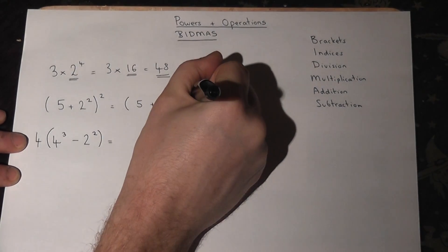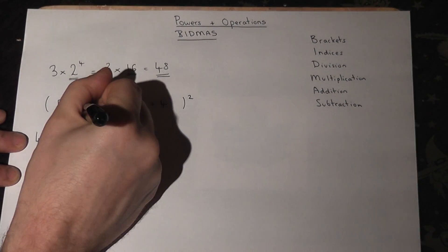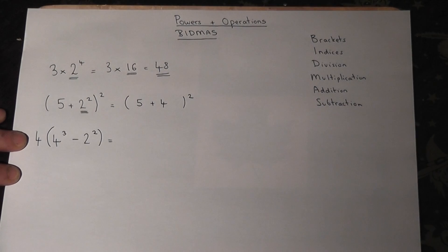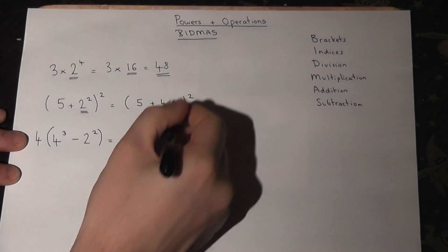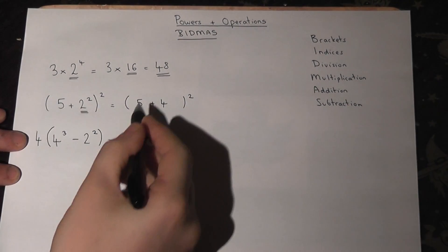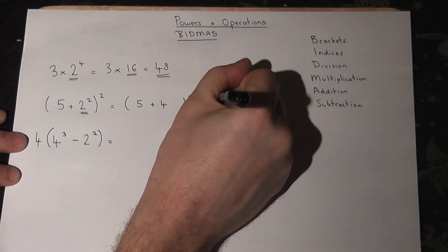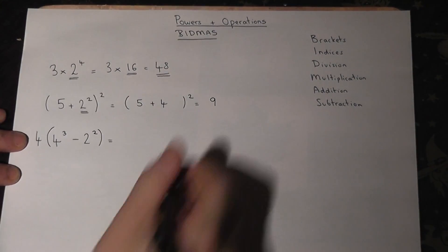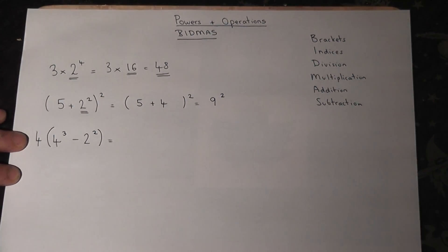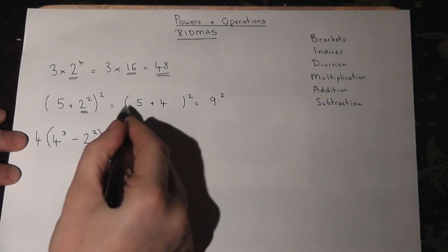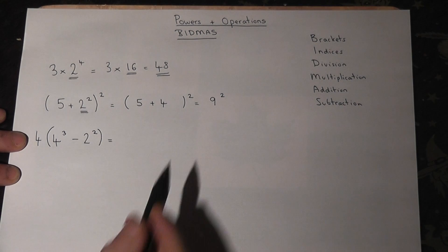And that's then squared, so I've worked out this bit here first of all. So we've got a bracket still there so we must still work out what's in the bracket. Well five plus four is just nine so we've got nine squared. We can now remove the bracket because we've worked out the thing within it and then nine squared is just nine times nine which is eighty-one.